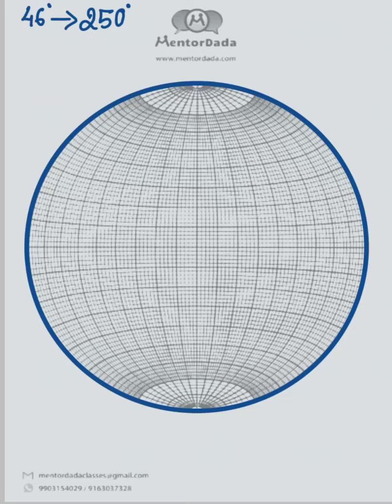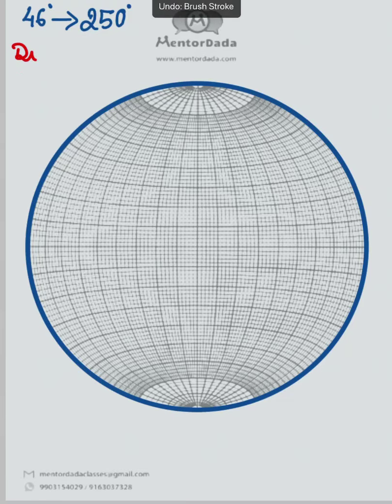So here we are given 46 degrees towards 250 degrees. Now this 46 degrees corresponds to the dip amount, whereas this 250 degrees corresponds to dip direction.